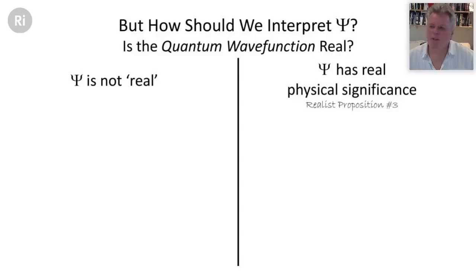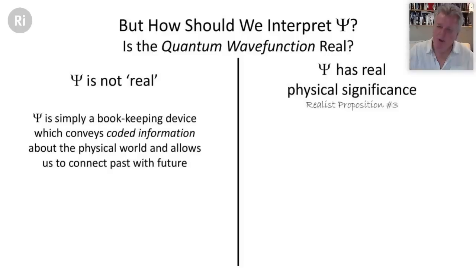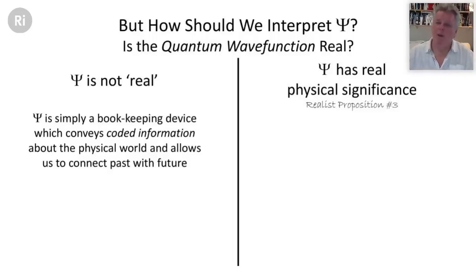If the wave function is not real, it means we look at it simply as a bookkeeping device — a hieroglyph representing something we don't fully know. We've learned through quantum mechanics to code our experience: we do things in the laboratory, matter behaves a certain way, and we code that in the equations represented by the wave function. This device connects past experience with future predictions — if we do this kind of experiment, we should see this result with a certain probability.